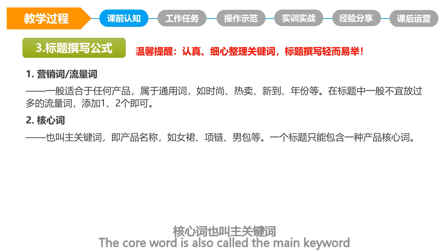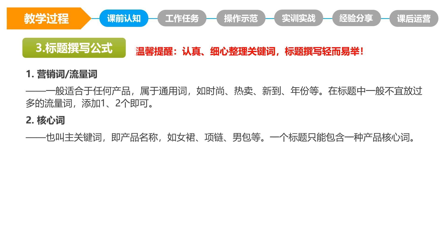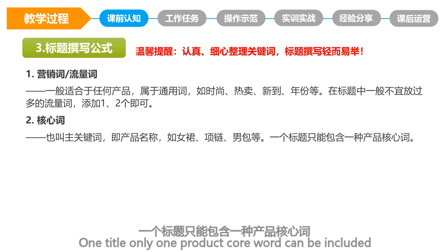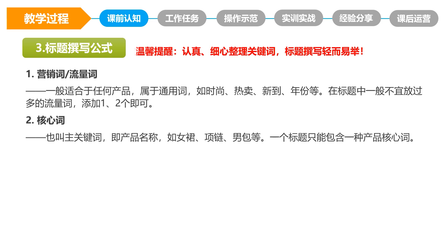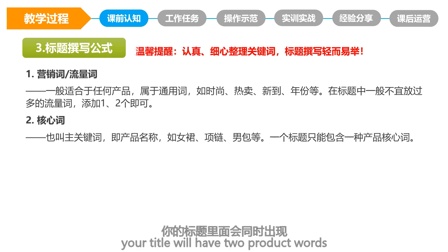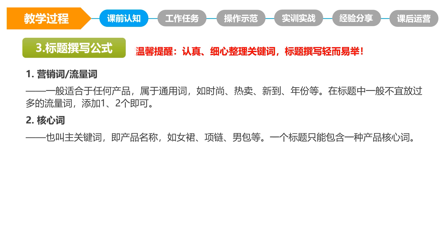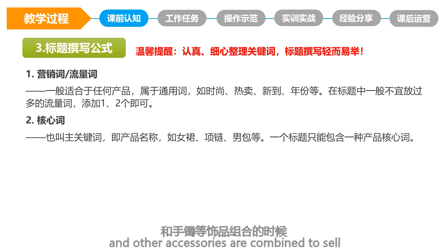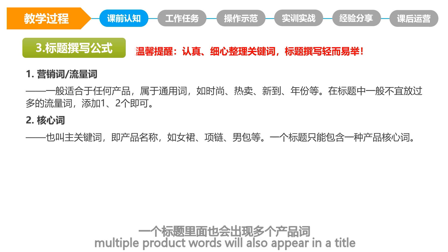The core word is also called the main keyword, that is the product name, such as women's skirts, necklace, men's bags, etc. One title can only include one product core word. But there are exceptions: when you sell a suit, your title will have two product words concurrently — tops and pants. When necklaces, earrings, and bracelets and other accessories are combined to sell, multiple product words will also appear in a title.